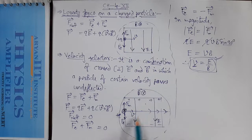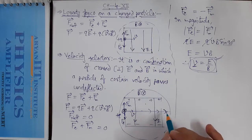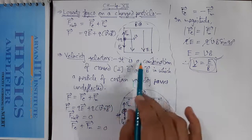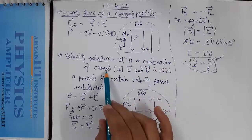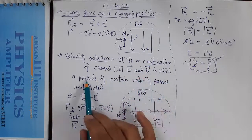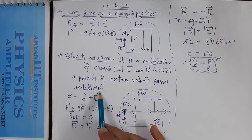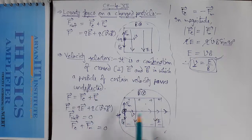That beam of certain velocity can then be bombarded on a target. Among many particles with all different velocities, we need only particles of a certain velocity or a certain kinetic energy — the velocity selector separates them. The combination of crossed electric and magnetic fields in which a particle of certain velocity passes undeflected and is separated from others is called a velocity selector.